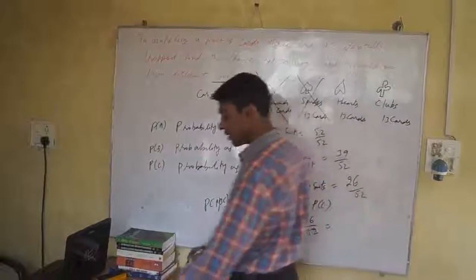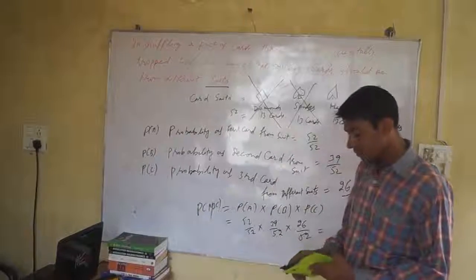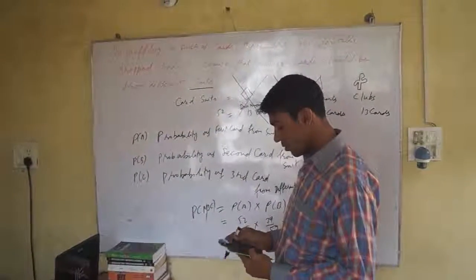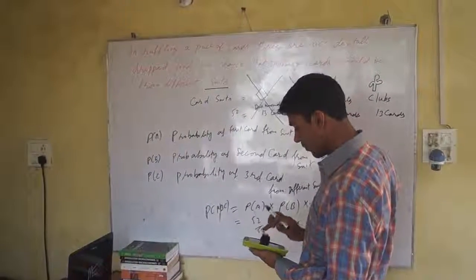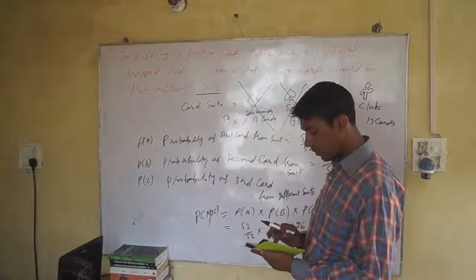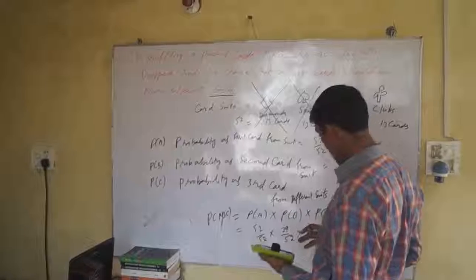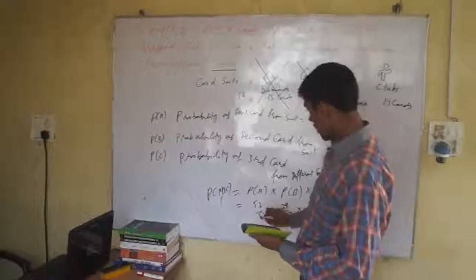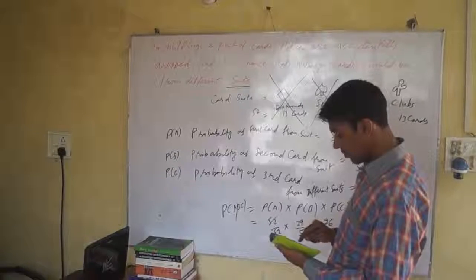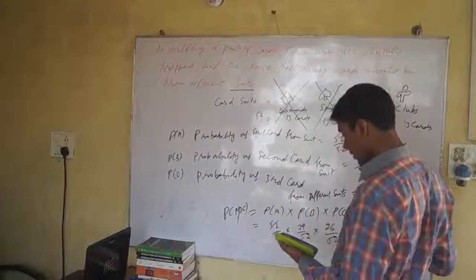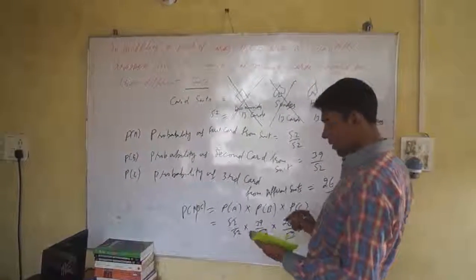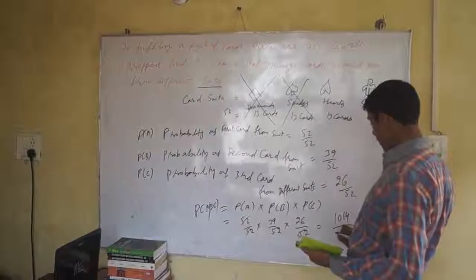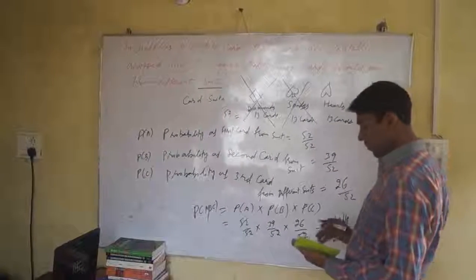We are just calculating. 52 into 52 into 52, we are cutting. 39 into 26 is 1014.